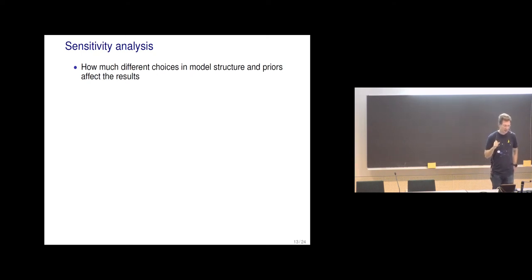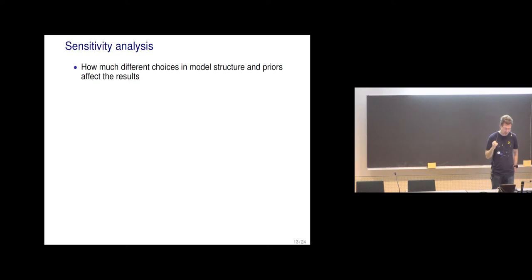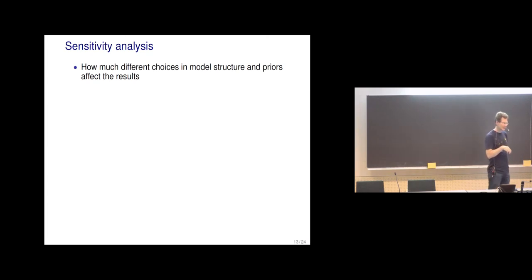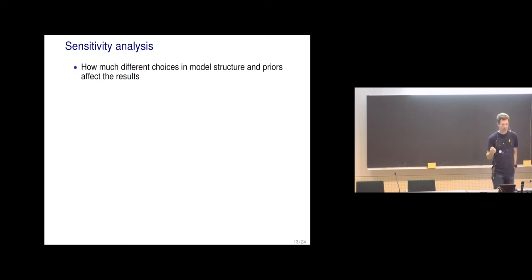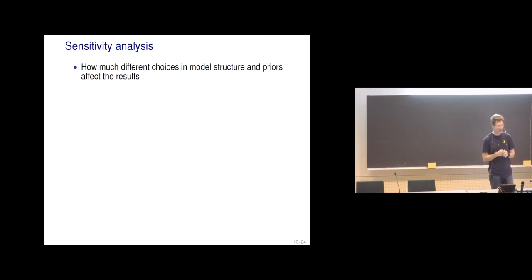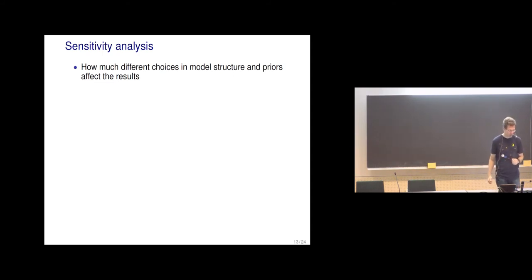Chapter 6 also covers sensitivity analysis — how much different choices in model structure and priors affect the results. This is slightly different from the checks that try to find a specific problem. We look at posteriors or predictive distributions and see how much they change when we change model structure or prior. I will give an example next week when discussing the project work.